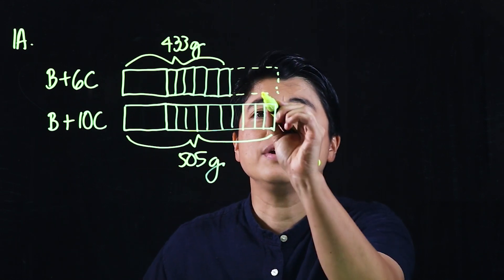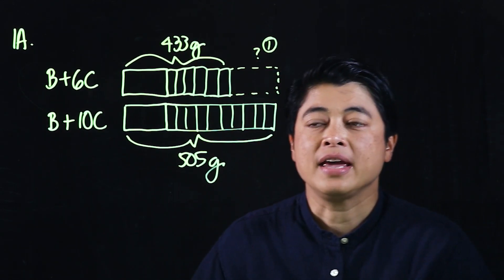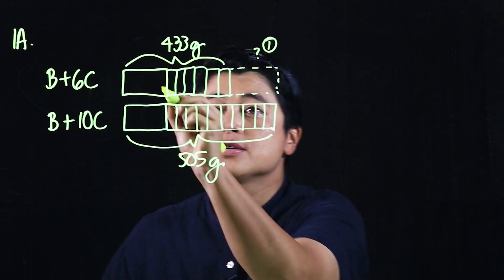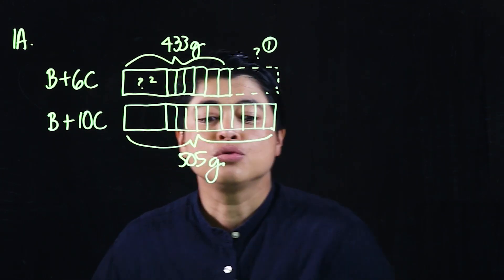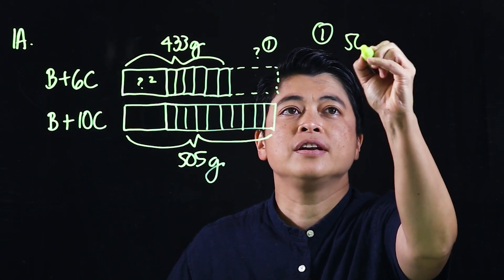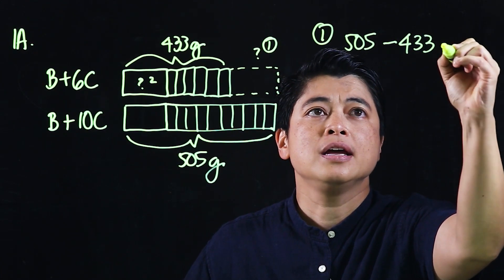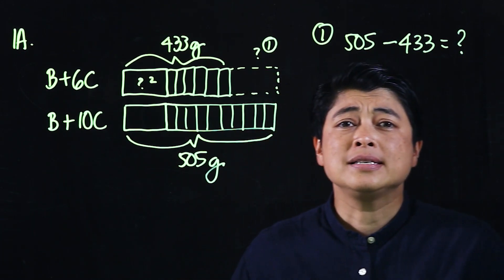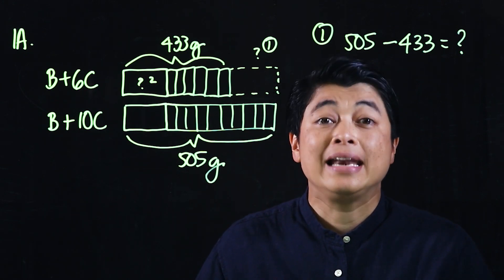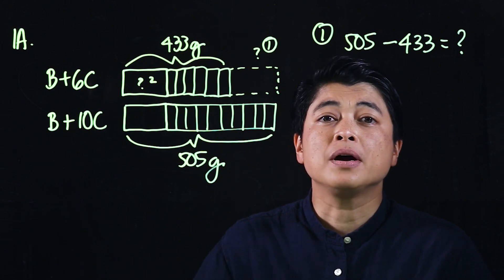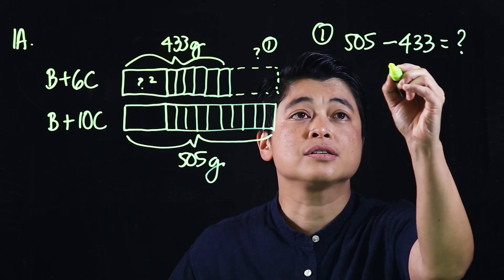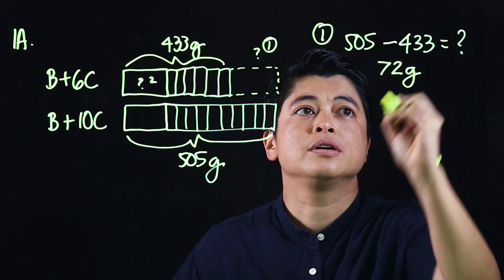Which means this missing portion here is the mass of the four extra cookies. So the first thing that we want to do is find that, so I'll put question mark one. But the real question is what is the mass of the box, so that means this is question mark number two. We'll start with number one: 505 minus 433 equals 72 grams.